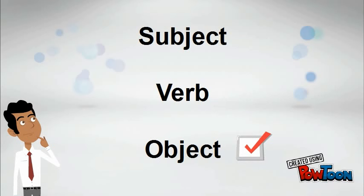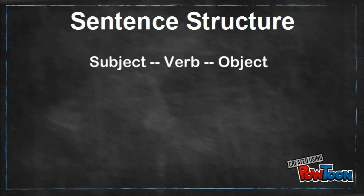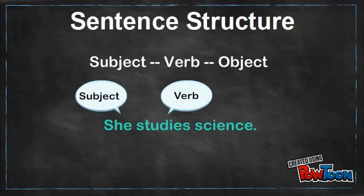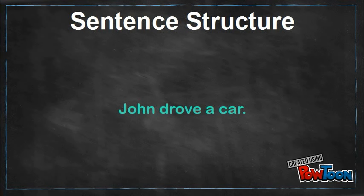Now that we have explained the basic parts of a sentence, let us look at the basic word order in an English sentence. The correct English word order is subject, verb, object. Here are some examples: in the sentence 'she studies science,' the subject is she, the verb is studies, and the object is science. Similarly, in the sentence 'John drove a car,' the subject is John, the verb is drove, and the object is car.